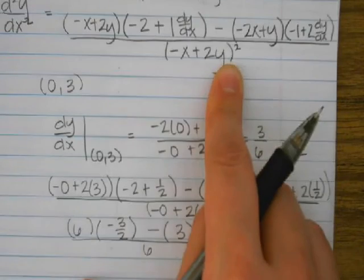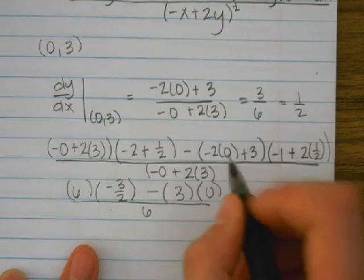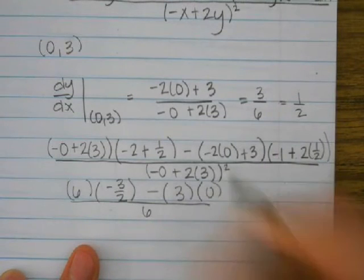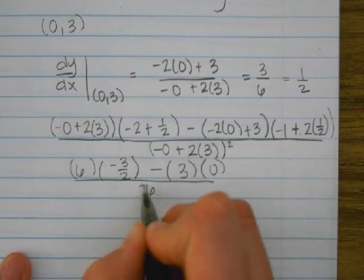So down here, this is negative 0 plus 2 times 3 piece is being squared. That means we've got 6 squared on the bottom, which is actually 36.